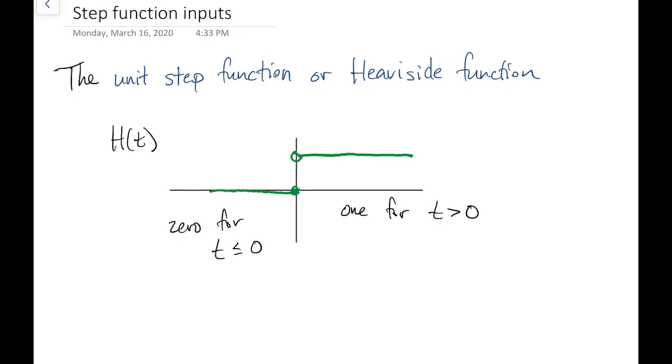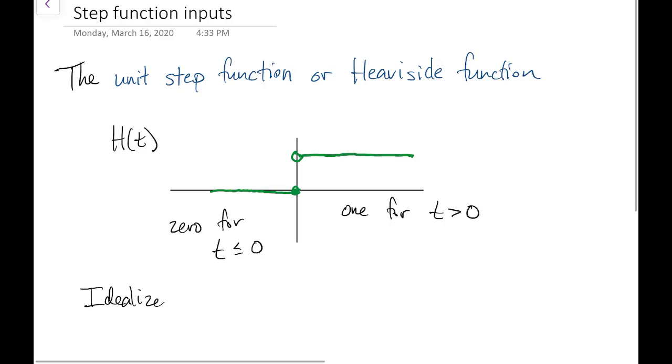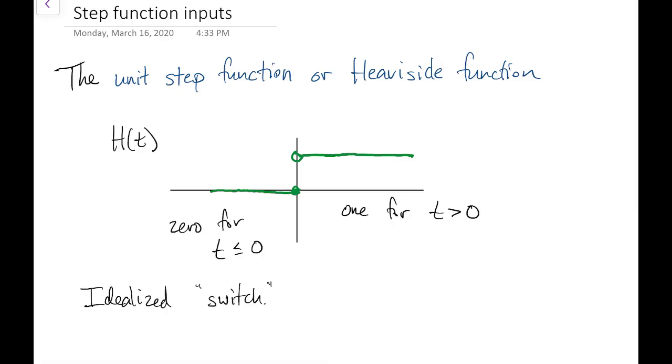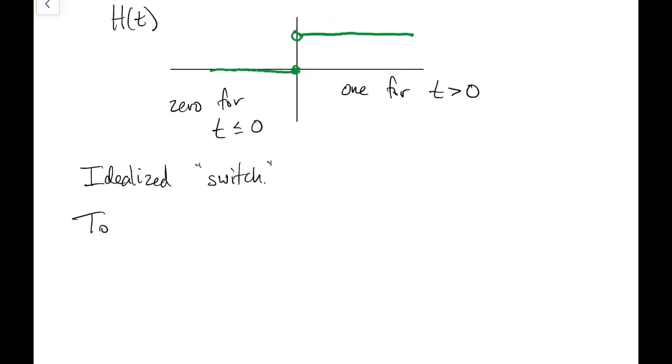So the Heaviside function represents the idealization of flipping a switch. If the switch is supposed to come on at some time other than 0, we can just shift the argument of the step function.